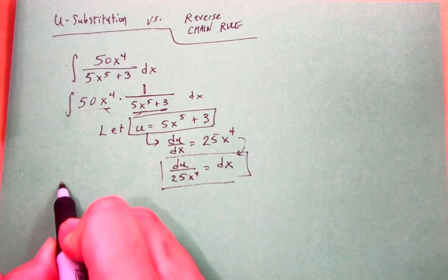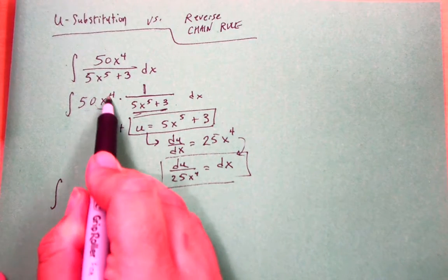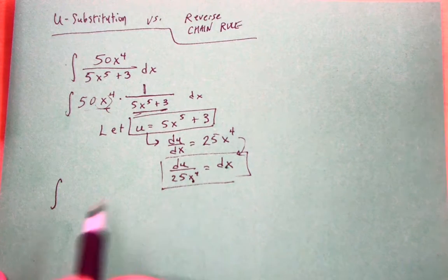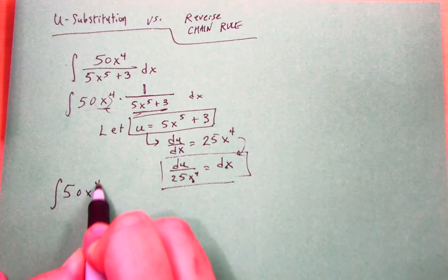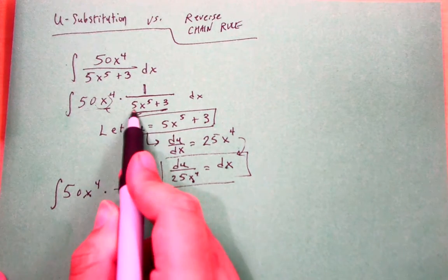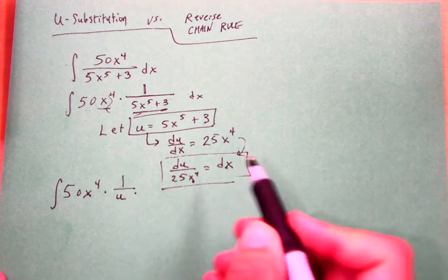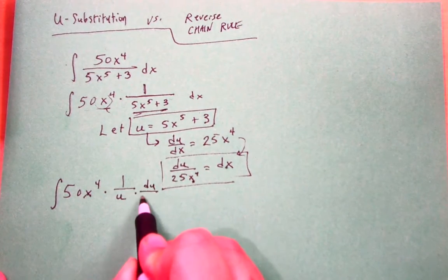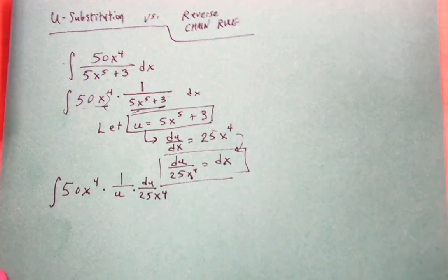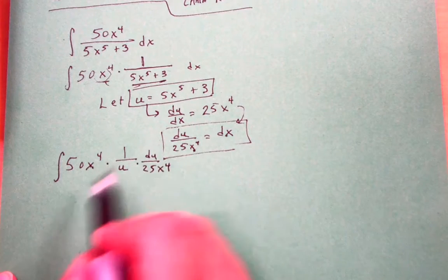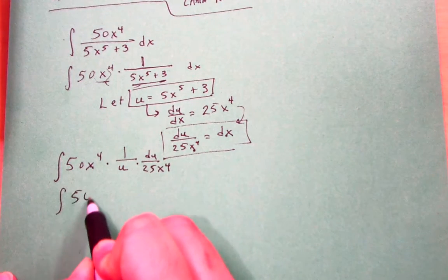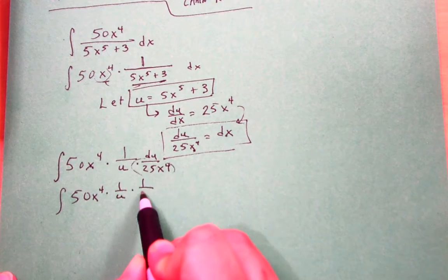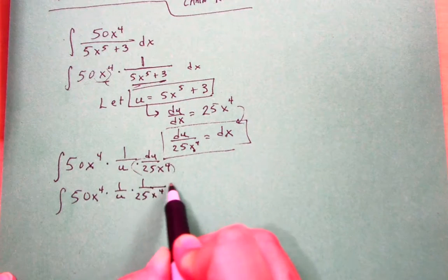So I'm now going to go back to my original problem and I'm going to make some substitutions. Notice, I don't have an explicit x to the 4th and that's okay. Notice that I have another x to the 4th right here. So 50x to the 4th is going to stay there. Times 1 over, well I'm calling this business here u, and dx is all this business here. So du over 25x to the 4th. So let's simplify this a bit. Notice 50x to the 4th times 1 over u. I'm going to go ahead and write this as a fraction, 1 over 25x to the 4th times du.